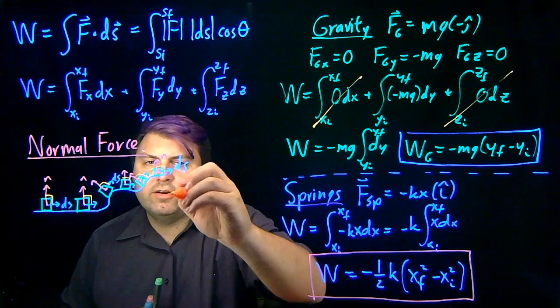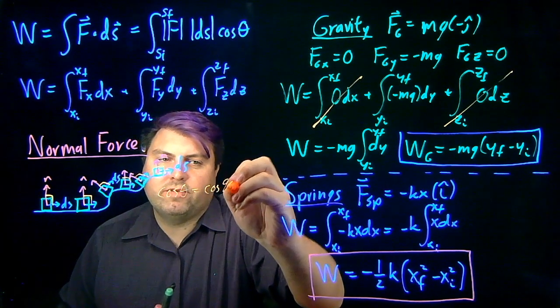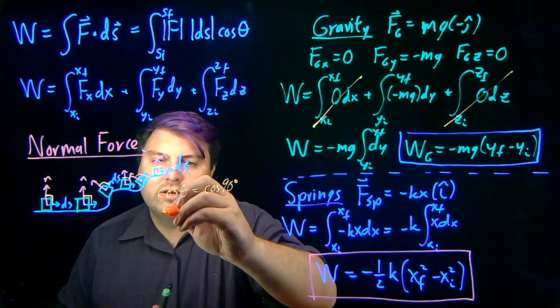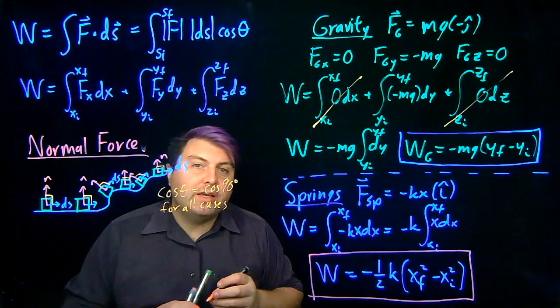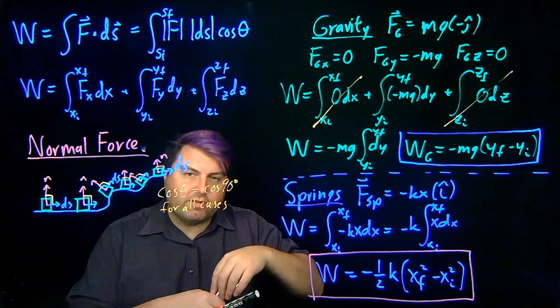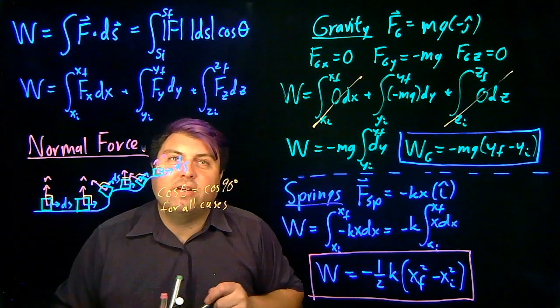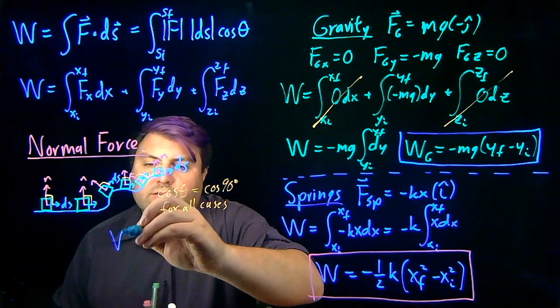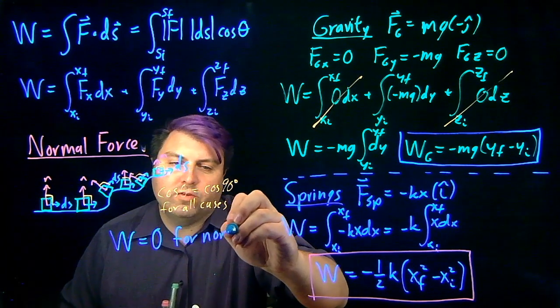So we have that our cosine theta is equal to cosine of 90 degrees for all of our cases. If that's the case, if it's always 90 degrees, then this cosine of 90 degrees is always zero. So then the work is zero for our normal force.